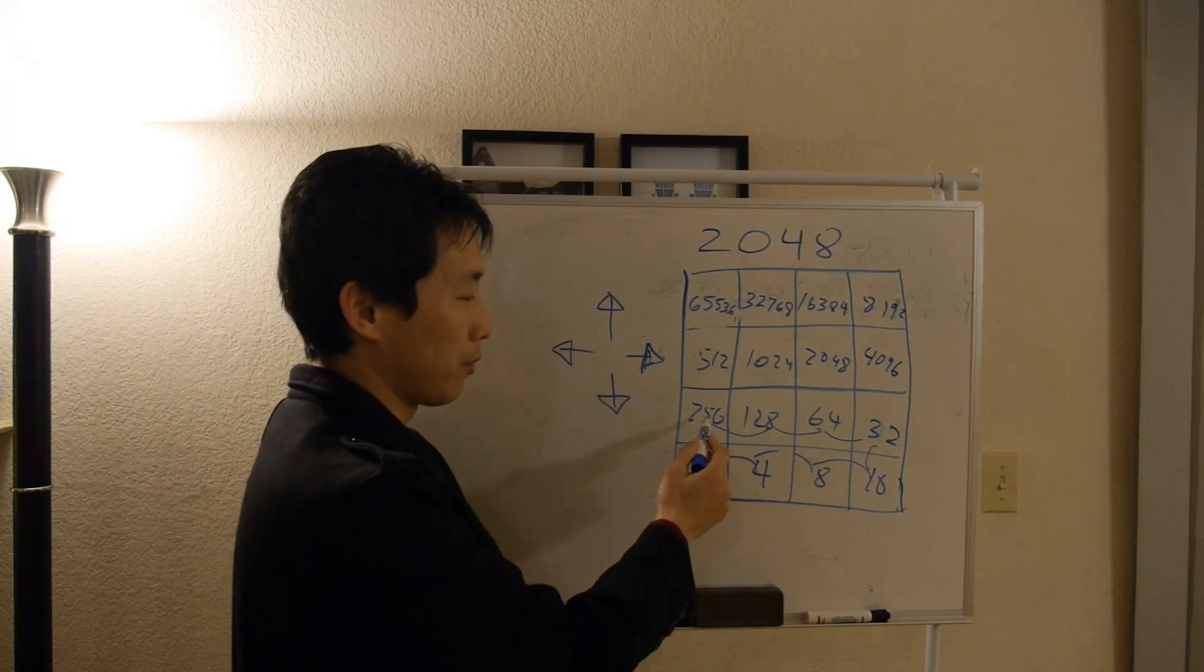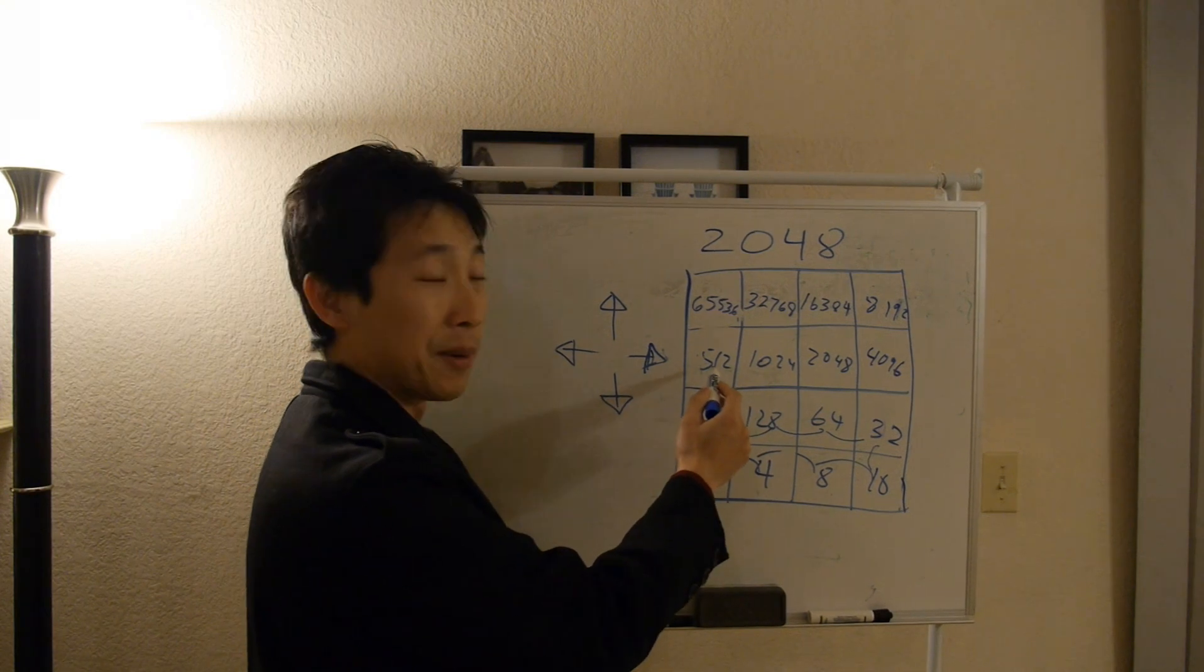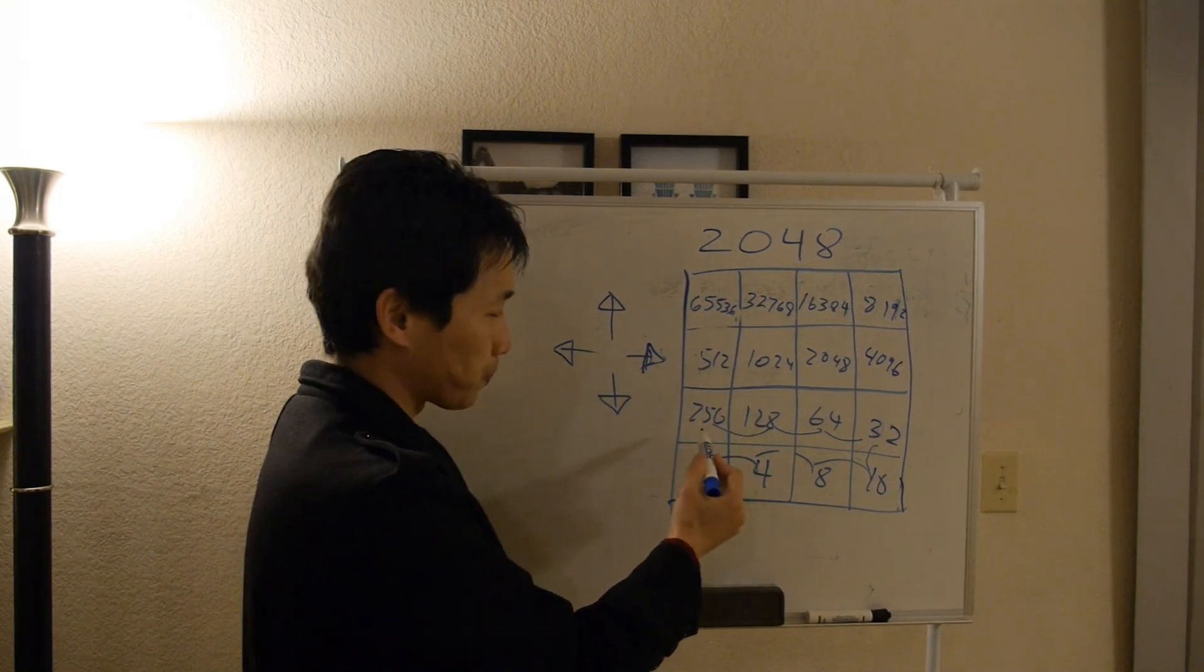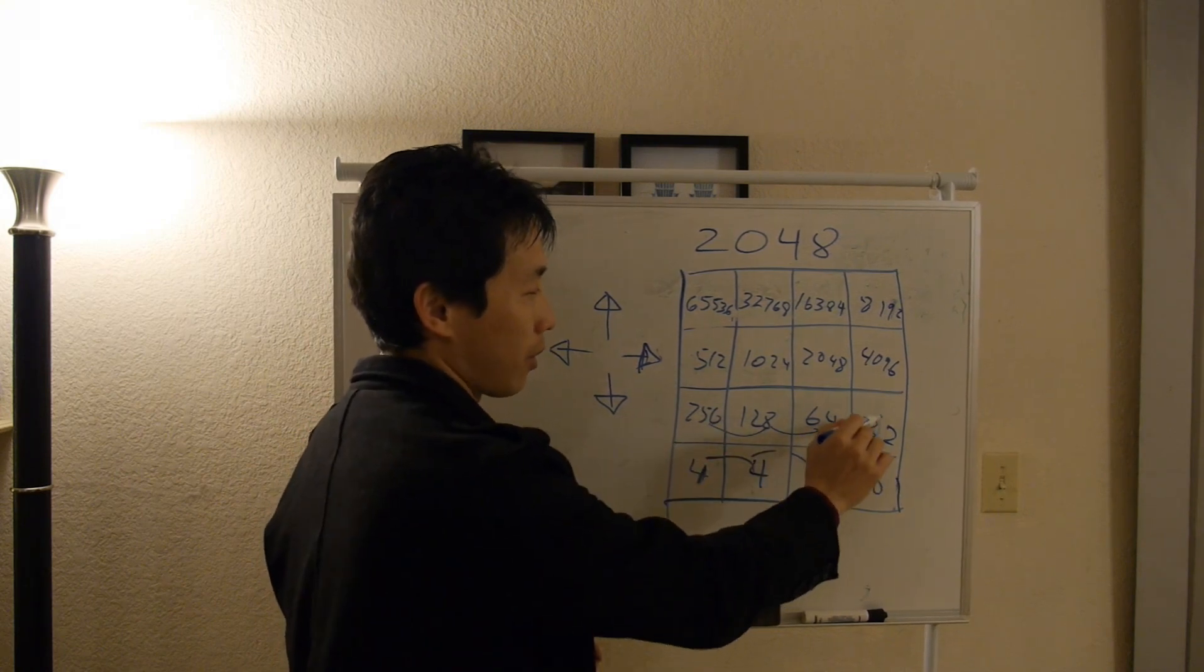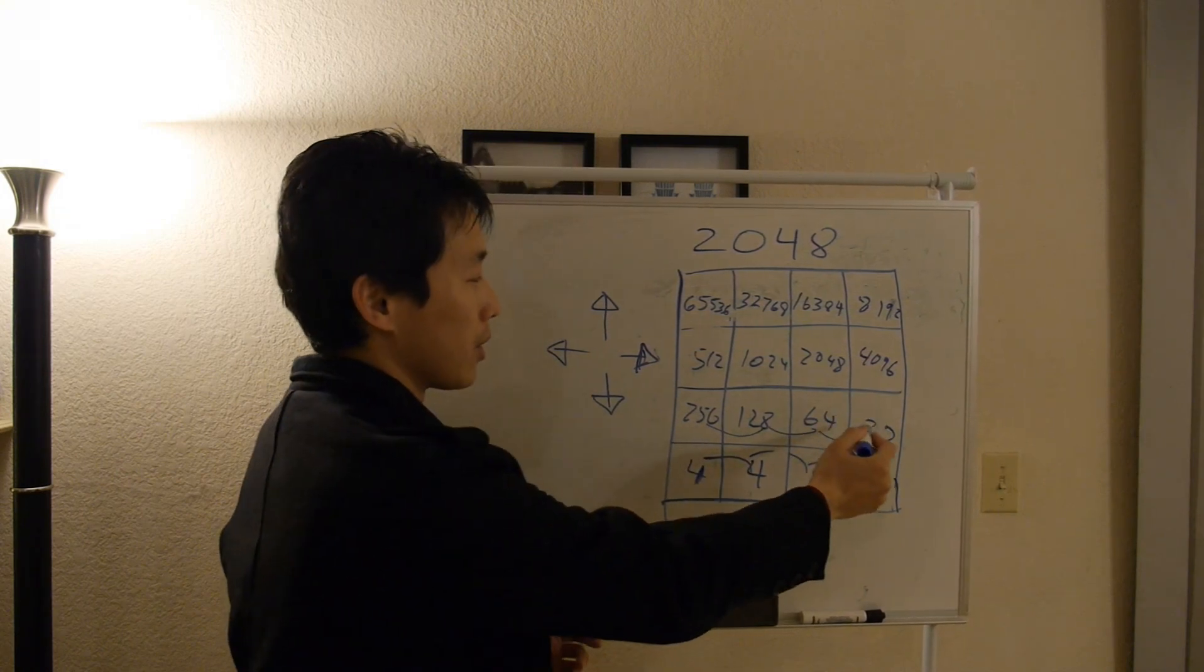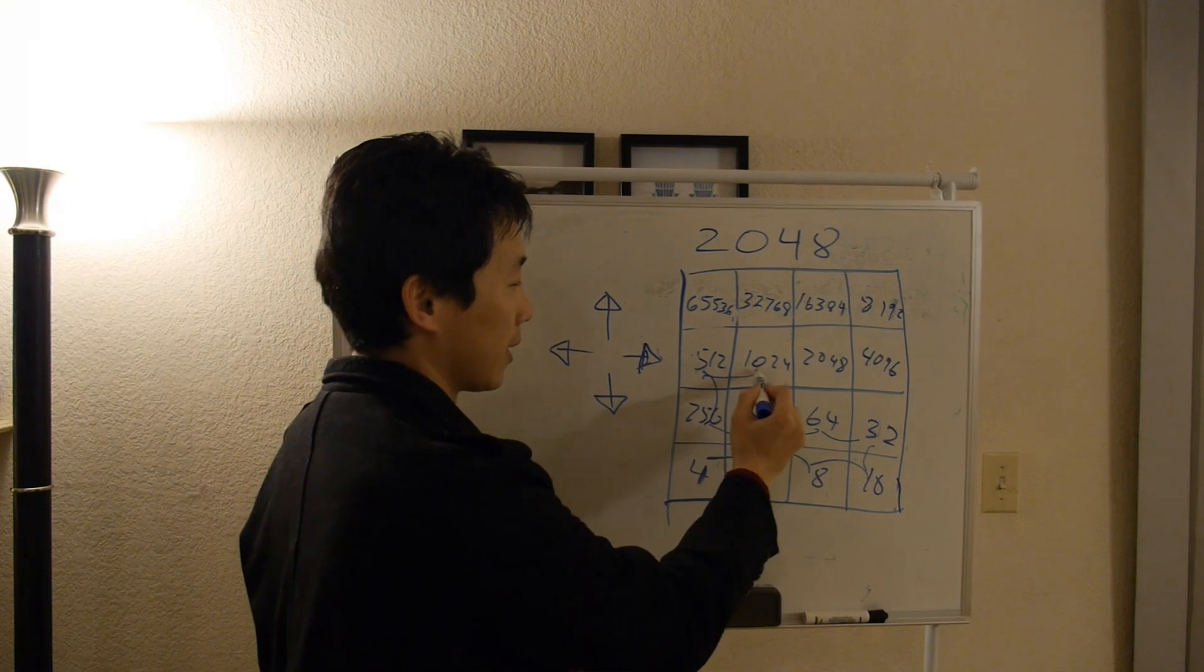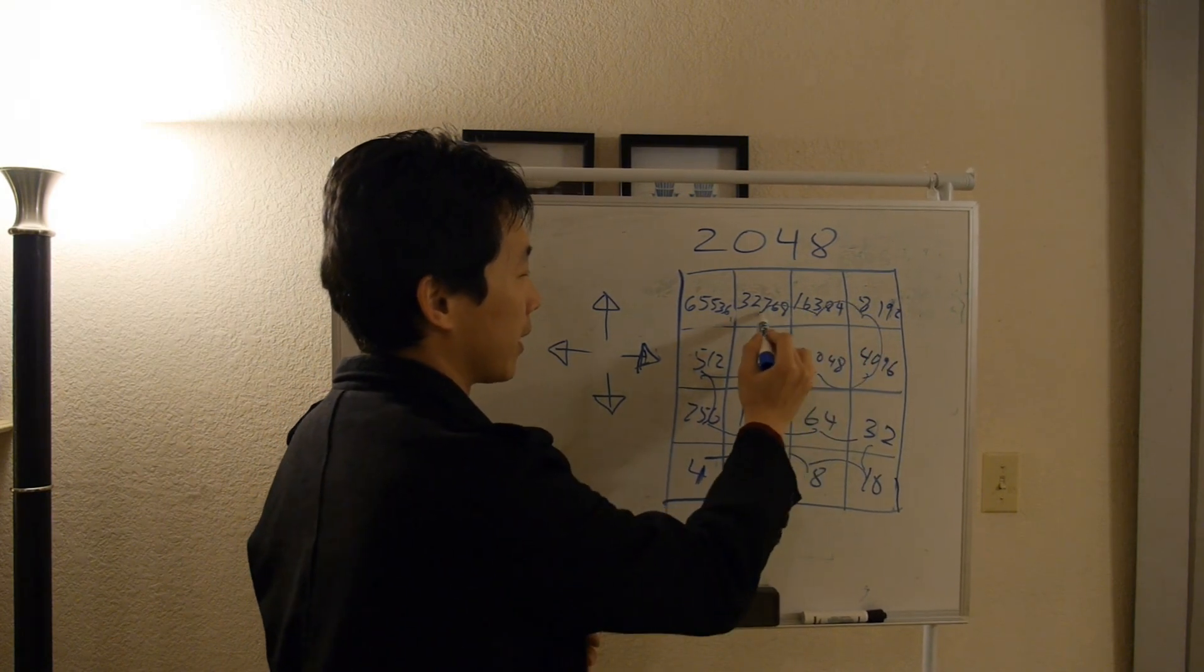You notice that I've essentially put 512 right next to the same number here because if I didn't, there wouldn't be room for me to push this all the way this way and combine with that one. So essentially it would cascade all the way here.